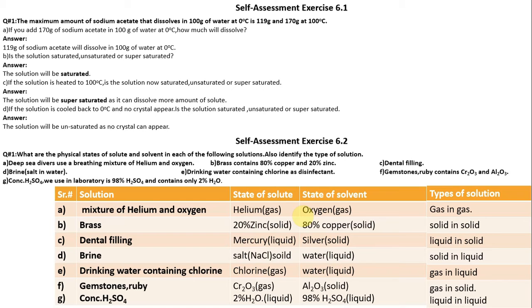For gemstone ruby: Cr2O3 is the solute in solid form, Al2O3 is the solvent in solid form — type of solution is solid in solid. For concentrated H2SO4: 2% H2O is the liquid solute, 98% H2SO4 is the liquid solvent — type of solution is liquid in liquid.